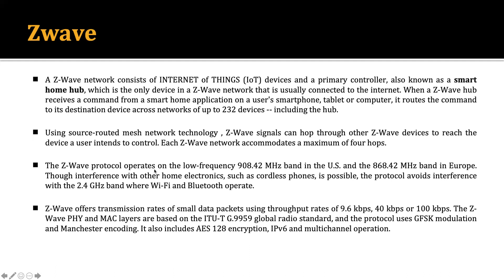The Z-Wave protocol operates in a low-frequency band: 908.42 MHz in the US and 868.42 MHz in Europe. To avoid interference with other home electronics such as cordless phones, the protocol avoids the 2.4 GHz band where Wi-Fi and Bluetooth operate.